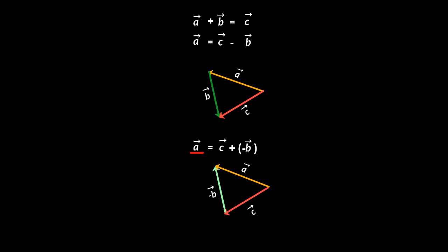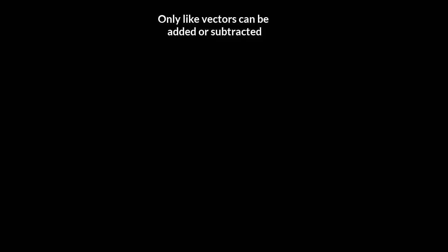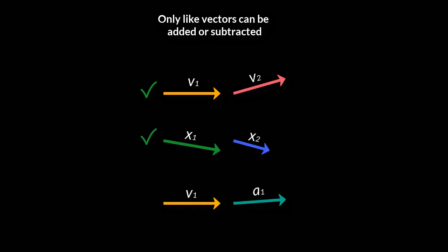Another thing you must remember is that only like vectors can be added or subtracted. That is, you can add velocity to velocity or you can add or subtract displacement from displacement, but you cannot add velocity and acceleration. It's quite like if you try to add 21 seconds and 2 meters, which would not make sense. And the same is true for vectors.